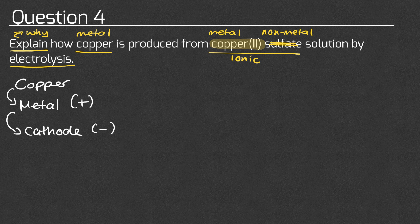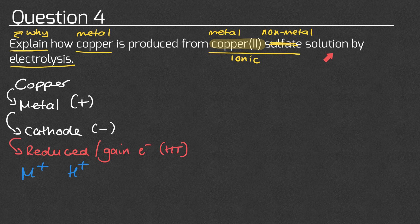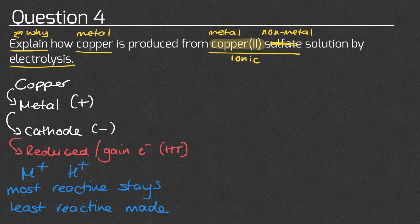Copper is a metal so it's going to be positive, which means this reaction is going to happen at the cathode, which is negative. For higher tier, we also say that at the cathode the copper will be reduced because it will gain electrons — it has a positive charge therefore it gains electrons, which means it's reduced. We can use the phrase OIL RIG to help us remember this. Since we're in a solution, at the cathode we've got a choice of either making the metal ion or the hydrogen ion. The most reactive will stay in solution and the least reactive will be made.